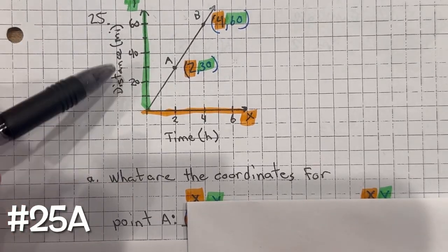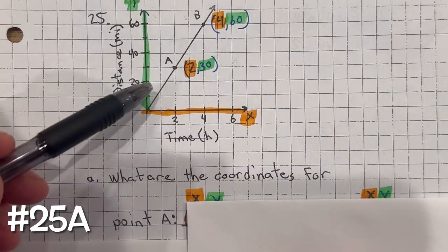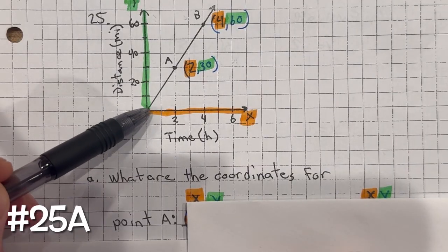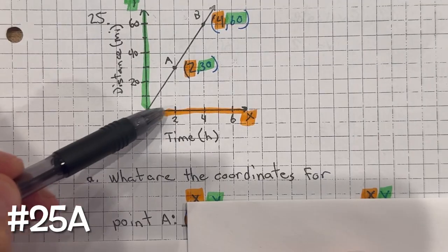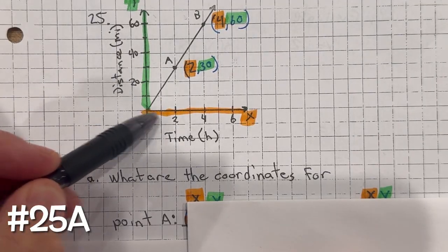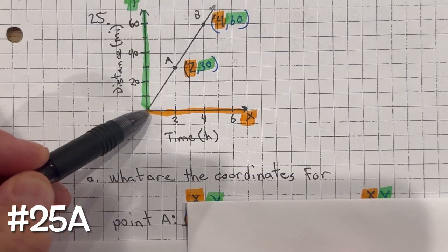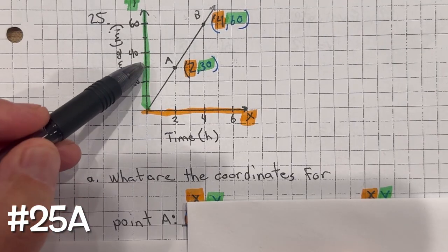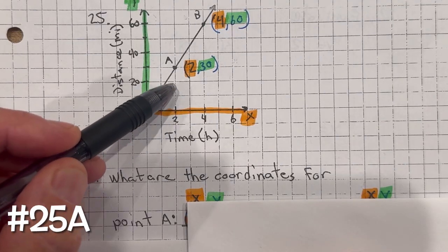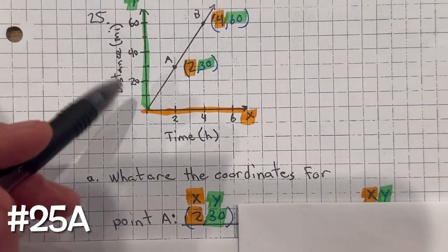Problem 25. What are the coordinates for point A on the graph? The first coordinate is the x value and then the y. The scaling on the x-axis is going by 1s and the scaling on the y-axis is going by 10s. So 1, 2 on the x, then 10, 20, 30 on the y. So point A is (2, 30).